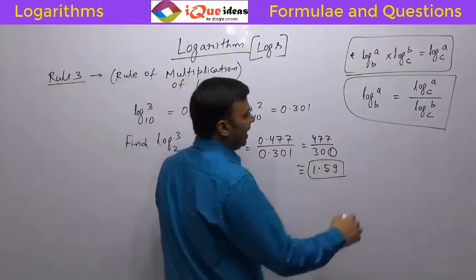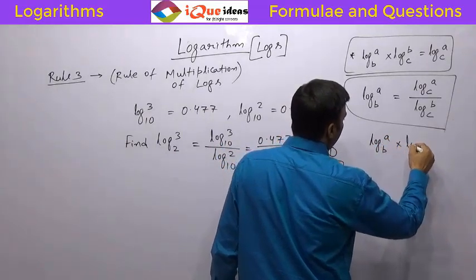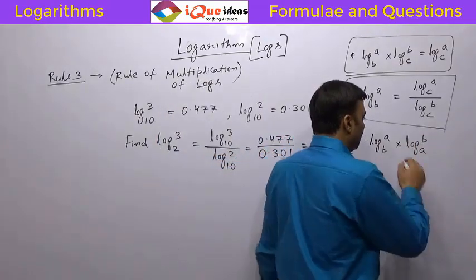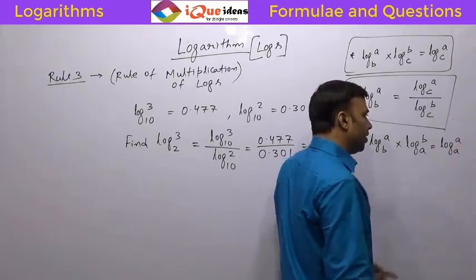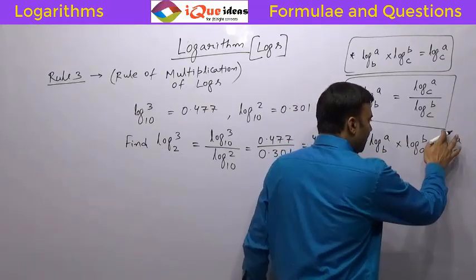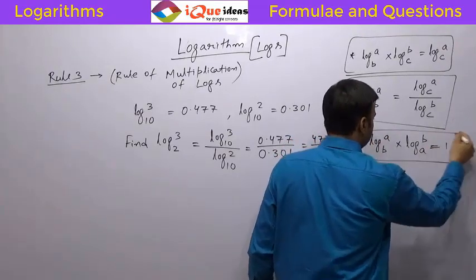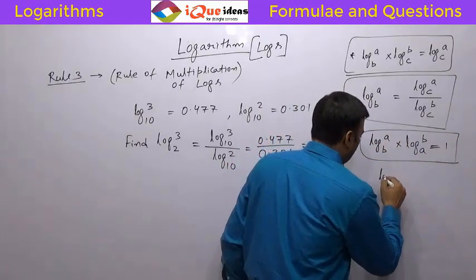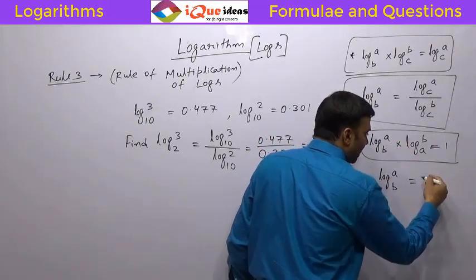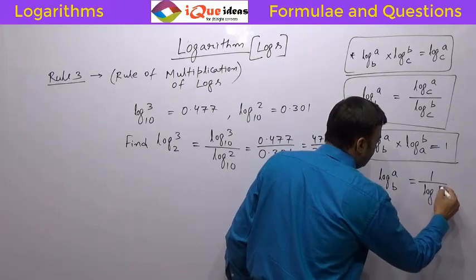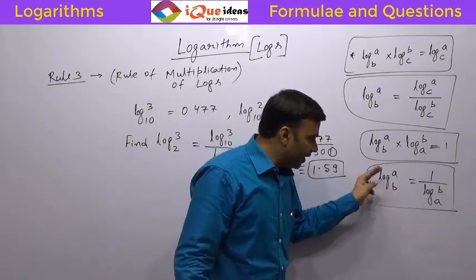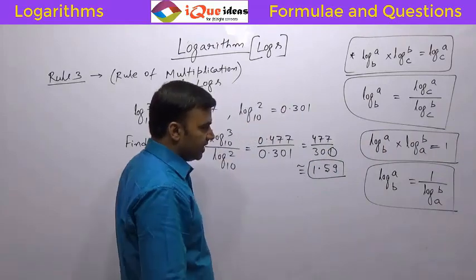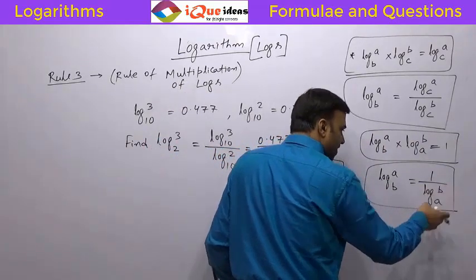What if we have log A to the base B into log B to the base A? Taking B as the common number, it goes away and we are left with log A to the base A, which is 1. So log A to the base B into log B to the base A equals 1. From this, log A to the base B equals 1 divided by log B to the base A. So if you need to reverse the position of number and base, take it in the denominator. If a log in the denominator comes to the numerator, the number and the base interchange.